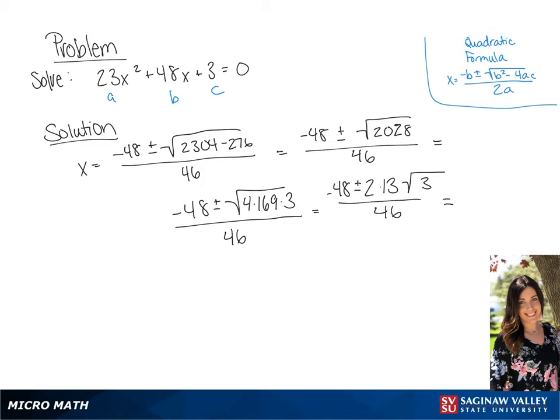We can simplify this and we will get a final answer of negative 24 plus or minus 13 times the square root of 3 all over 23.